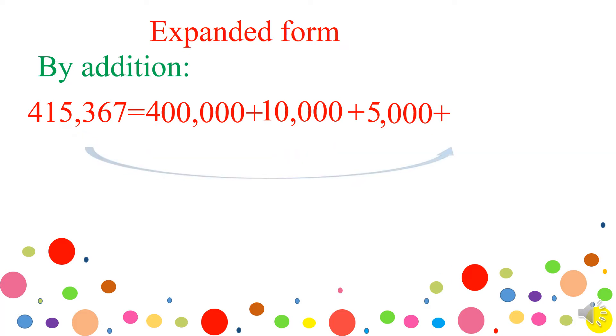Plus, we have to write now the three with two zeros because we have two digits after it. Plus, six with one zero because we have one digit after it.